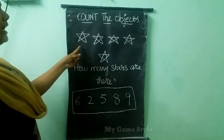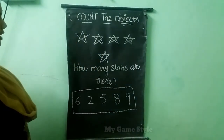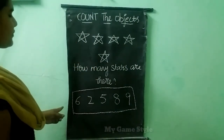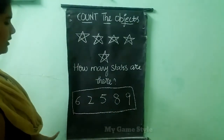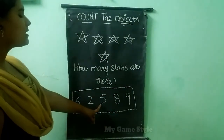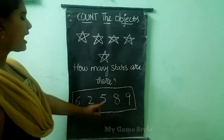Here total 5 stars are there. So where is 5 number, children? This is 5. This is the correct answer.